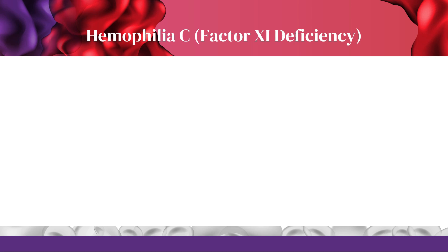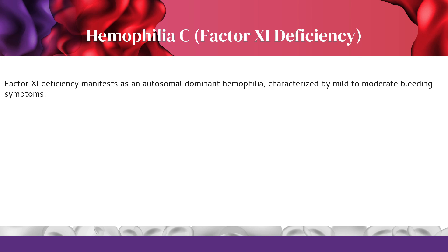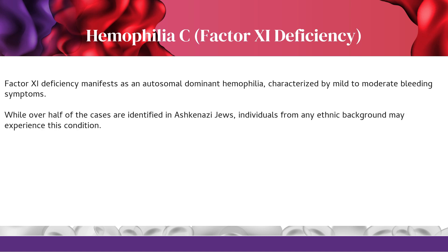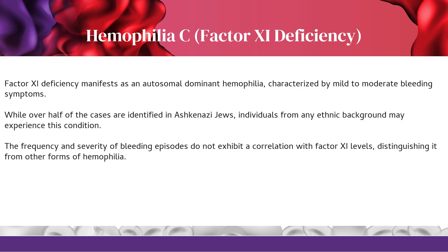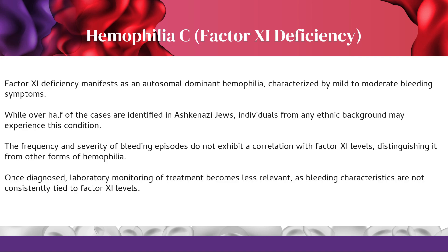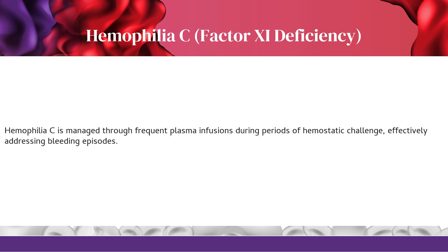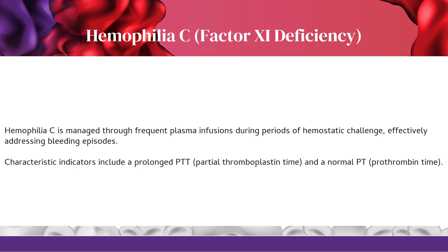Hemophilia C — Factor 11 Deficiency manifests as an autosomal dominant hemophilia, characterized by mild to moderate bleeding symptoms. While over half of cases are identified in Ashkenazi Jews, individuals from any ethnic background may be affected. The frequency and severity of bleeding episodes do not correlate with factor 11 levels, distinguishing it from other forms of hemophilia. Hemophilia C is managed through frequent plasma infusions during periods of hemostatic challenge. Characteristic indicators include a prolonged PTT and a normal PT.